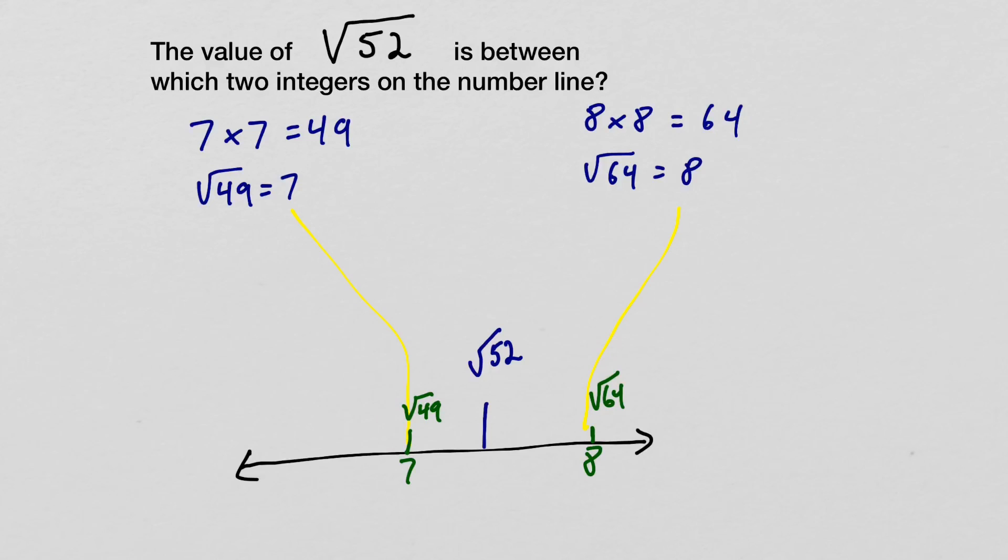So if you look, 49 and 64 are between the number 52, and that's another way to look at it. So now we've found the two integers that fall between the square root of 52.